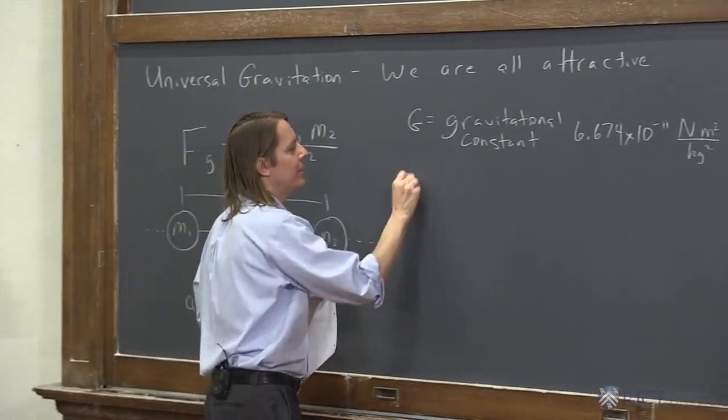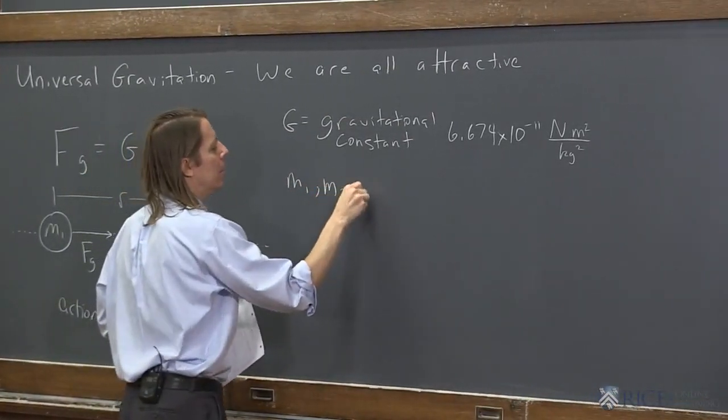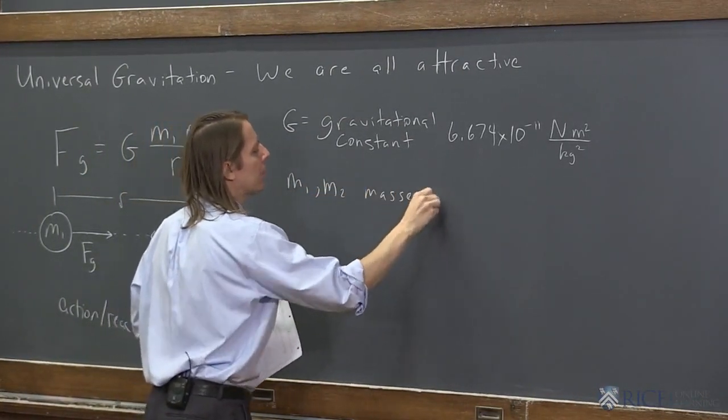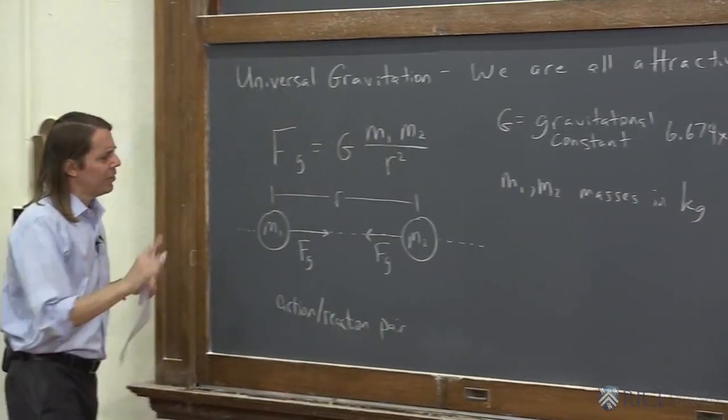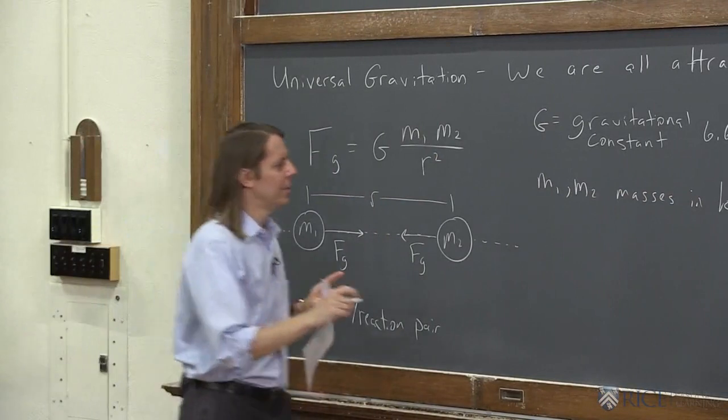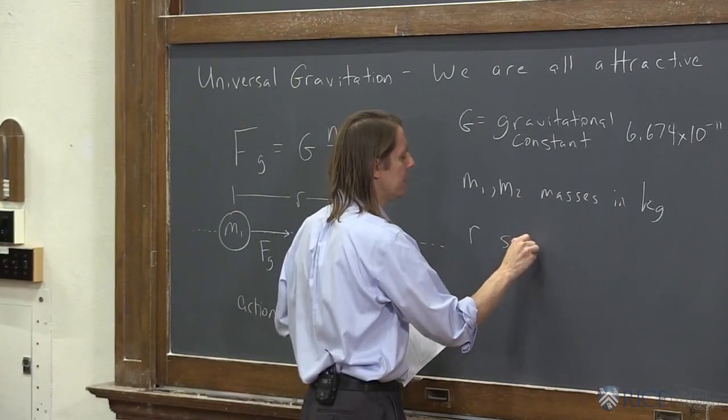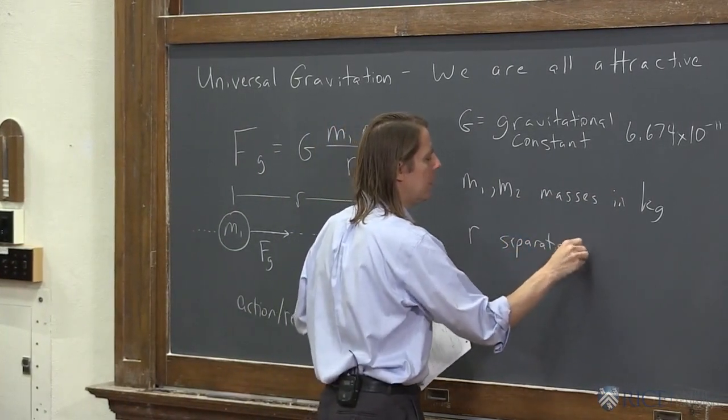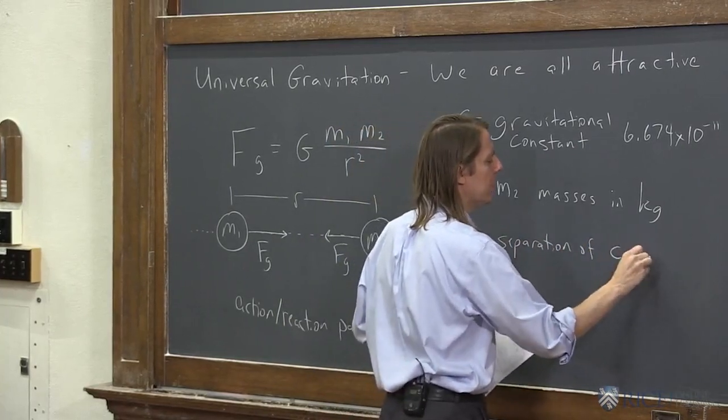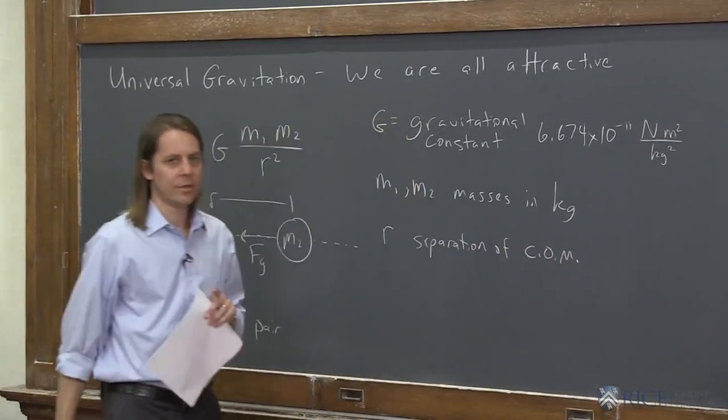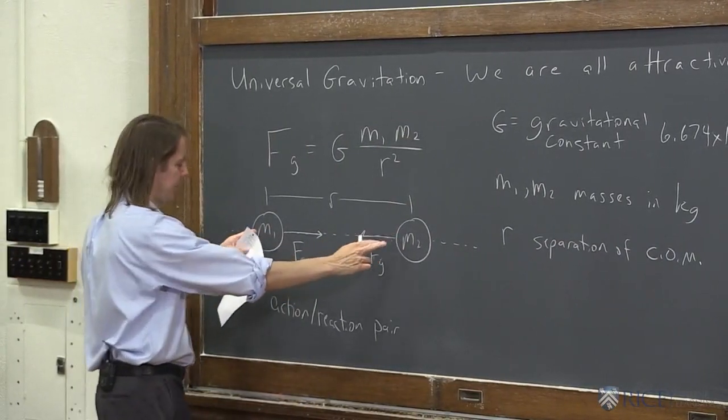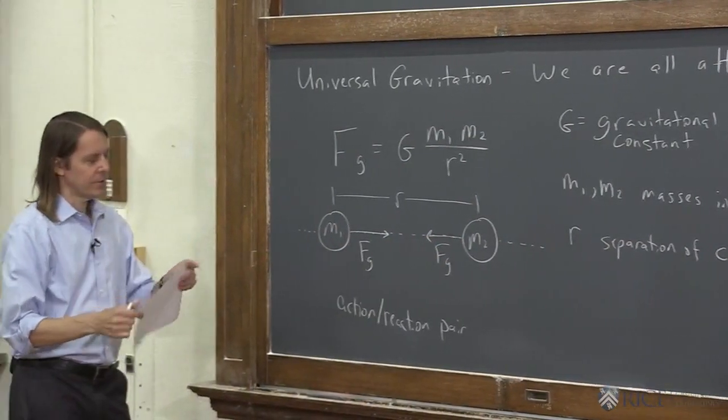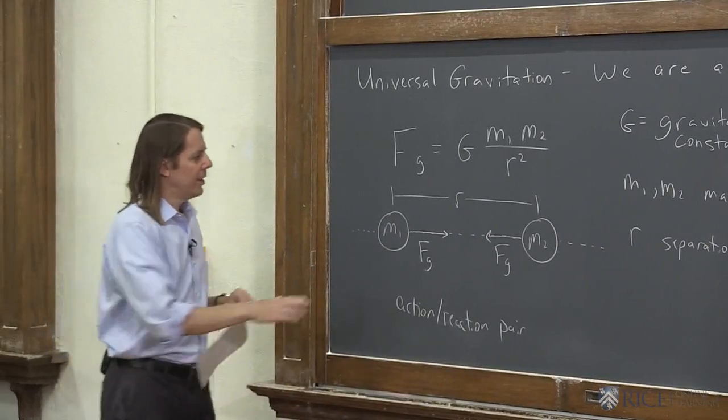So that's G in that formula. m_1 and m_2 are the masses in kilograms, of course, if you're working in MKS units. And r, to be specific, r is the separation of their center of mass. It's not from the edge to the edge. It's from, for uniform spheres, it's from the center to the center.